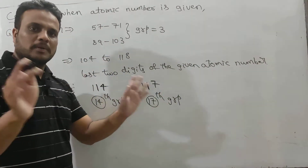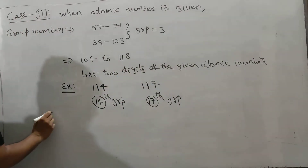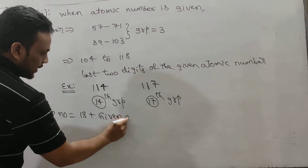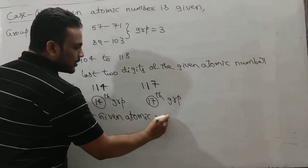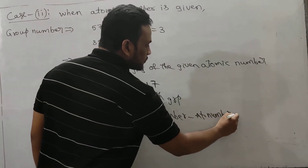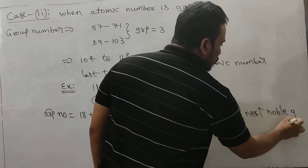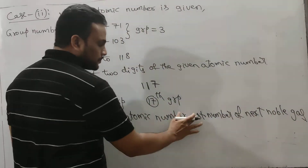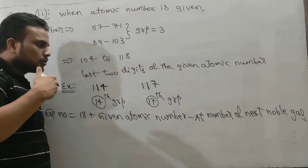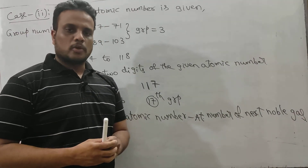For any other atomic number given, you have to use the formula: group number equals 18 plus given atomic number minus the atomic number of the next noble gas. When we are given an atomic number and asked to find period number or group number, it is very essential to memorize the atomic numbers of noble gases.